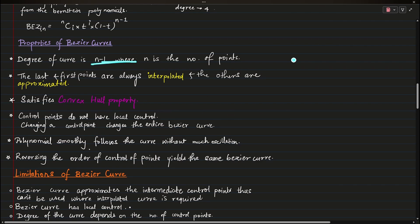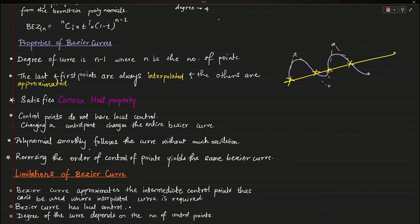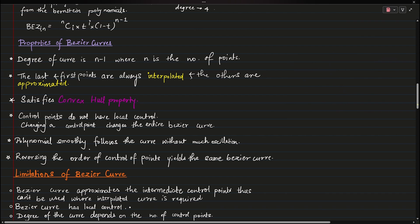These are some properties of Bezier curves. The degree of the curve is n minus 1, where n is the number of control points — this is based on Lagrange's theorem. For example, if you draw a line through control points and count the intersections, a curve through 5 control points has degree 4. The first and last points are interpolated and the others are approximated.